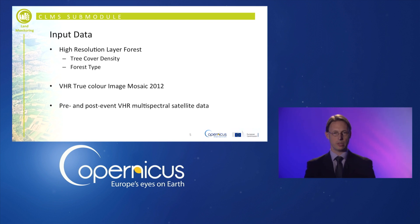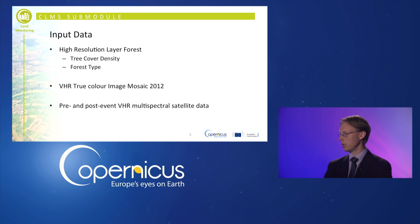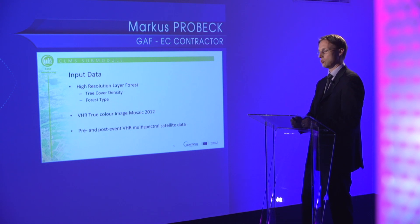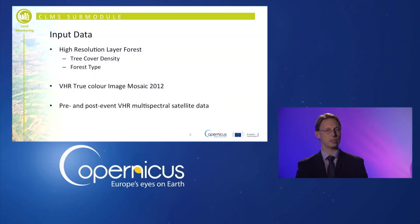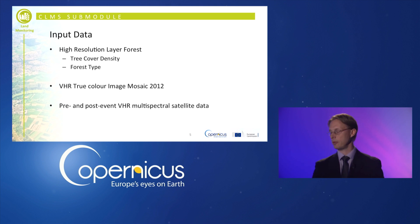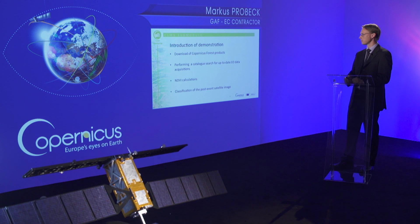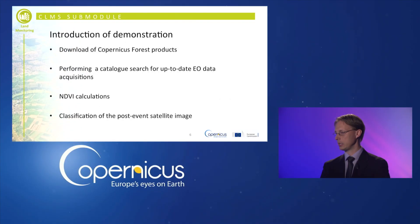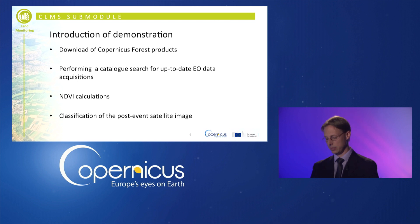The data used in this assessment are the high resolution forest layer products — both tree cover density and forest type. We also make use of true color image mosaics available in very high resolution from 2012, and very high resolution multi-spectral satellite data acquired before and after the storm event. The workflow covers downloading Copernicus forest products, performing catalogue searches, calculating the NDVI, and classifying actual damage areas.